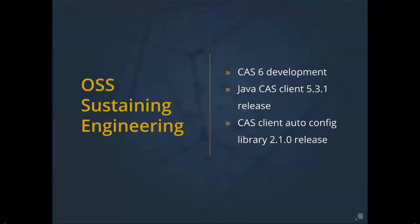Unicon's sustaining engineering went into CAS 6 development, 5.3 updates, and the CAS client, which was released at version 2.10. For questions on Oracle Java changes, CAS updates, versioning, or differences, contact Unicon. There are many more features not covered here — check the CAS blog for full details.